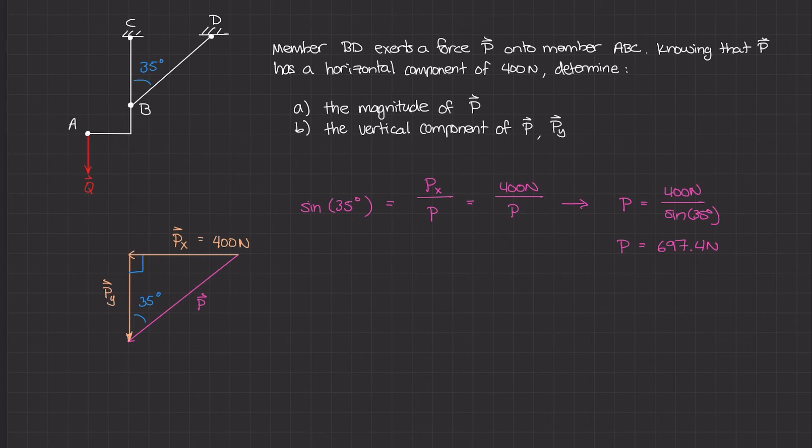The first way uses tangent. Tangent of 35 degrees is opposite over adjacent, so tangent of 35 degrees equals the magnitude of Px over Py. Py is our unknown and Px is 400 newtons. I can rewrite this as Py equals Px divided by tangent of 35 degrees.